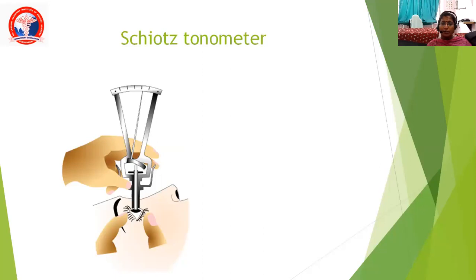Next is Schiotz's tonometer, which is an older type of contact tonometer. It is kept on the cornea and the reading is taken from the scale in the Schiotz's tonometer. The corresponding readings are then taken from the table provided with the instrument.